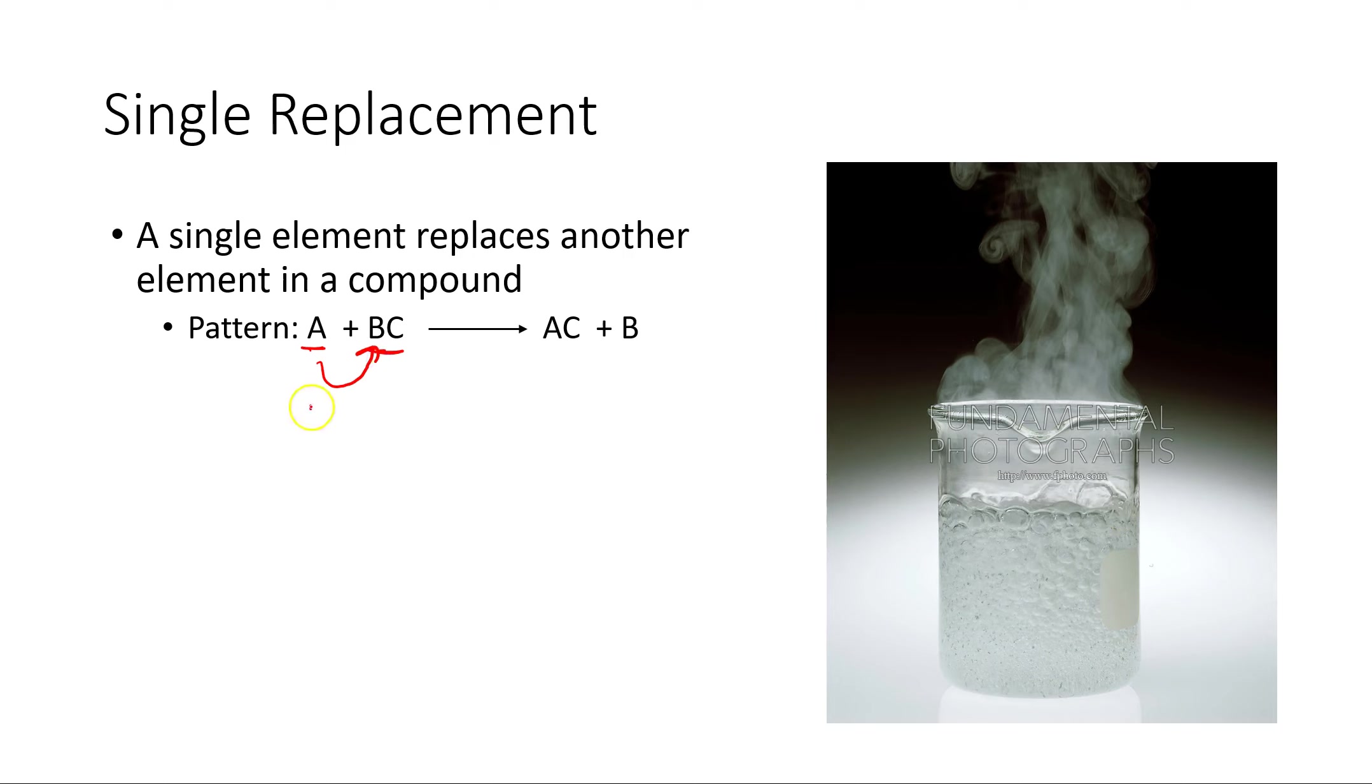What we do in this case is the single element in a single replacement reaction would actually replace one of the elements that's part of that compound. So typically, if this is a positive ion, it would replace another positive, or if this was a negative, it would replace another negative. So in this case, the way this is written, the A, the cation, the positive ion here, replaces B as the positive ion, and then B is off by itself. So essentially, A and B replace each other, or A replaces B as the cation in that compound.